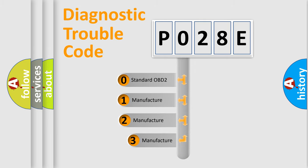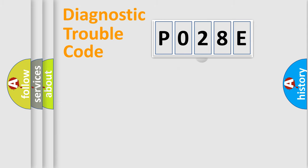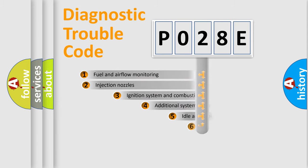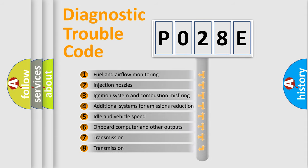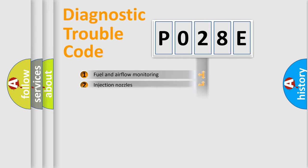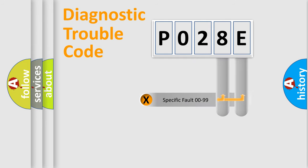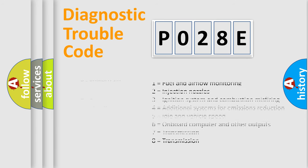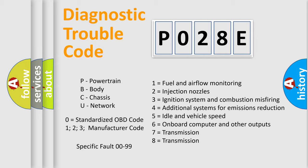If the second character is expressed as zero, it is a standardized error. In the case of numbers 1, 2, or 3, it is a manufacturer-specific error. The third character specifies a subset of errors. The distribution shown is valid only for the standardized DTC code. Only the last two characters define the specific fault of the group. Let's not forget that such a division is valid only if the second character code is expressed by the number zero.